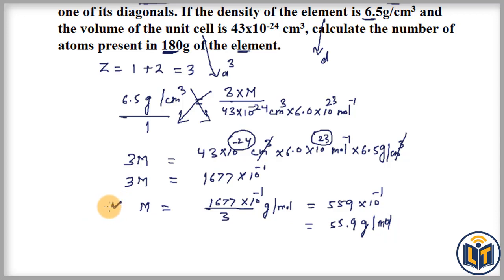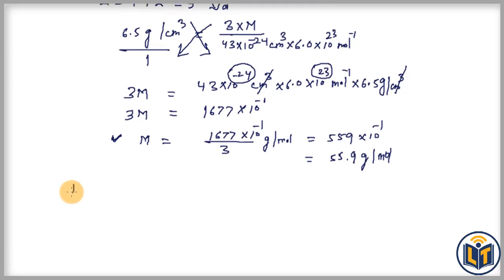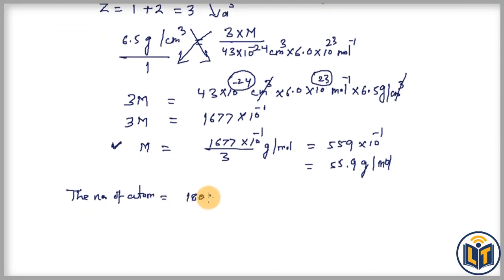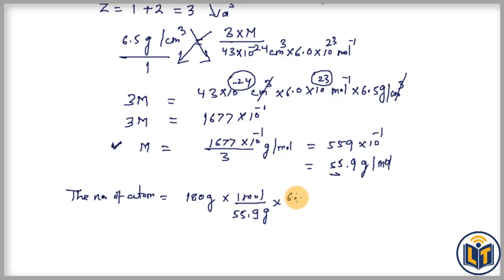Now the next step is to convert the mass of the element into moles and then find out the number of atoms. The number of atoms present in 180 gram of the element equals 180 gram multiplied by (1 mole / 55.9 gram) to cancel grams, then multiplied by (6.0 × 10²³ atoms / 1 mole) to cancel moles. Gram and mole units cancel out.